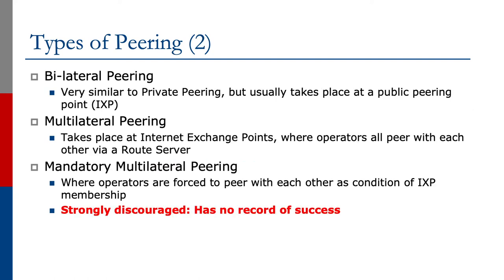Bilateral peering is very similar to private peering but usually takes place at a public peering point, for example an Internet exchange point. Multilateral peering takes place at Internet exchange points where operators all peer with each other via a device called a route server. Mandatory multilateral peering is where operators are forced to peer with each other as a condition of their exchange point membership.